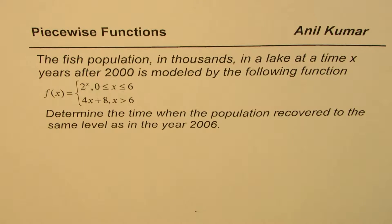So that's the question for you. You can always pause the video and then answer my question. Now what we see here is that the population of the fish is given as 2 to the power of x when x is between 0 to 6 including 6, and then it is 4x plus 8 when x is greater than 6.